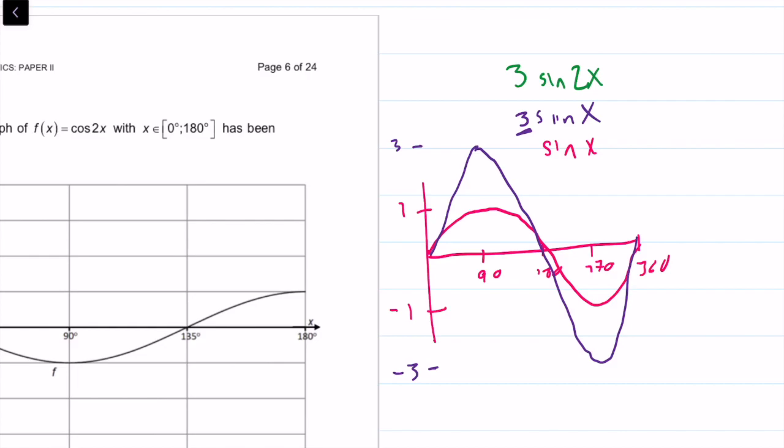What that does is the normal period for sine x is 360 degrees. But when we plug in a 2, we divide the normal period by 2. So our period now is actually equal to 180 degrees. That means everything happens a bit faster.